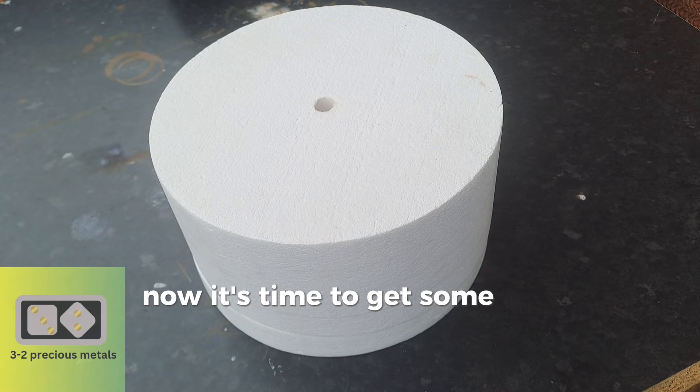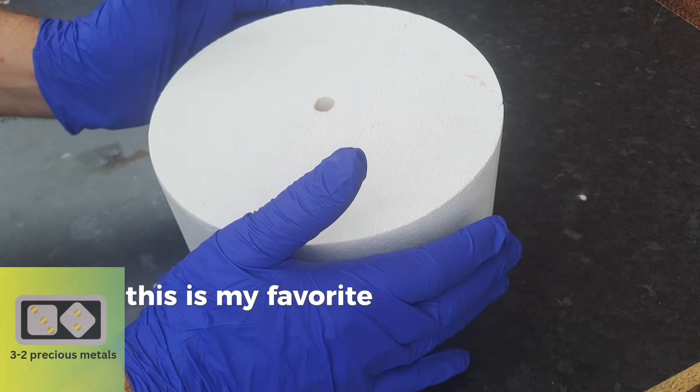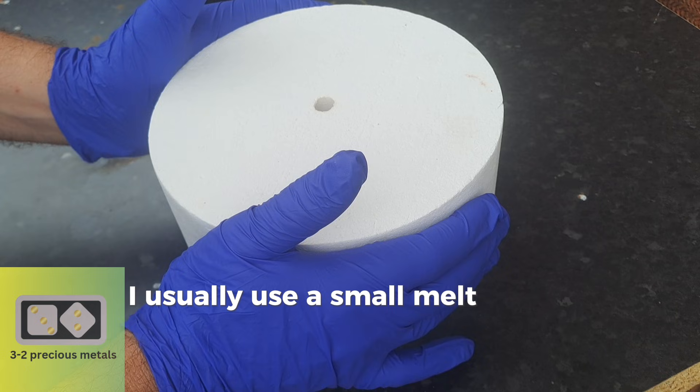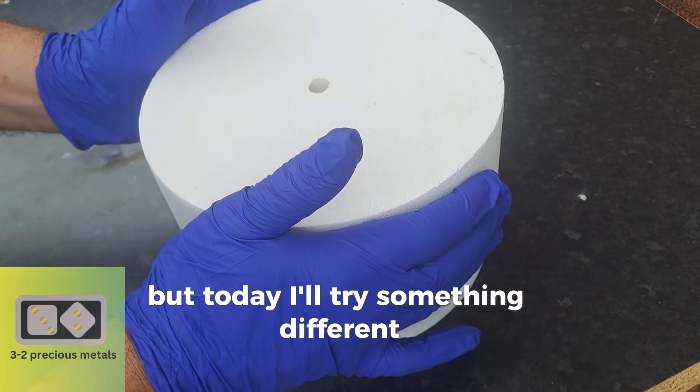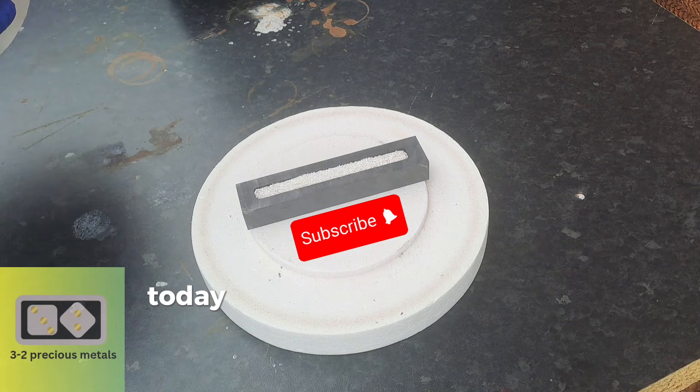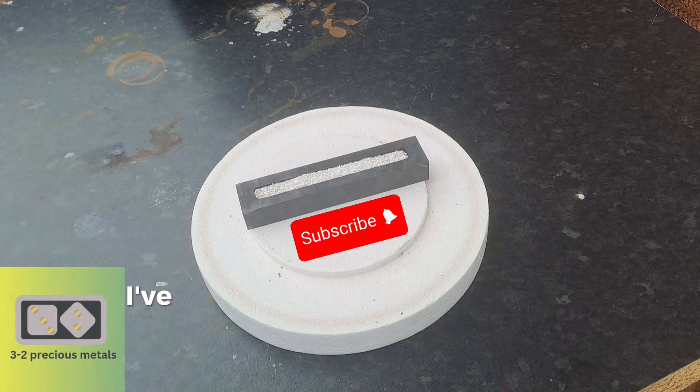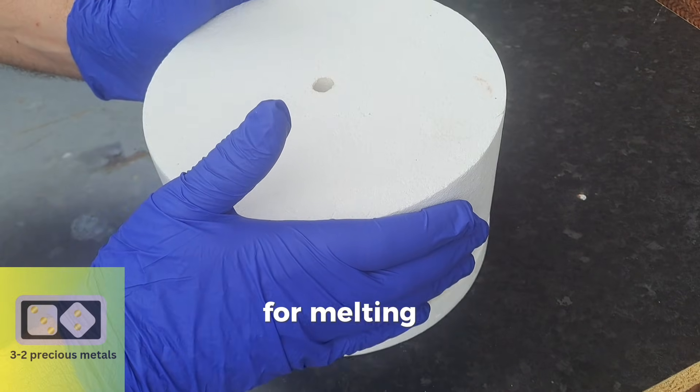Now, it's time to get some of those crystals melted. What I have here is a microwave furnace. This is my favorite way to melt precious metals. I usually use a small melt dish inside here, but today, I'll try something different. Today, I'm going to melt the crystals inside the mold. I've placed one troy ounce of the silver crystals into the mold for melting.